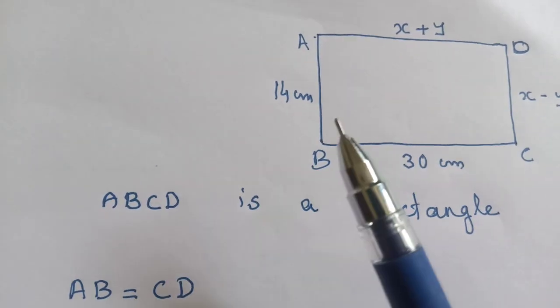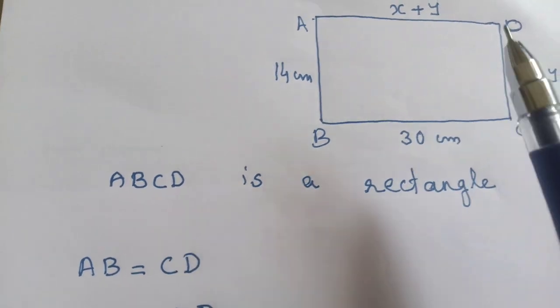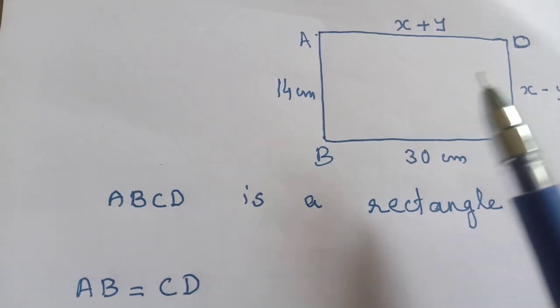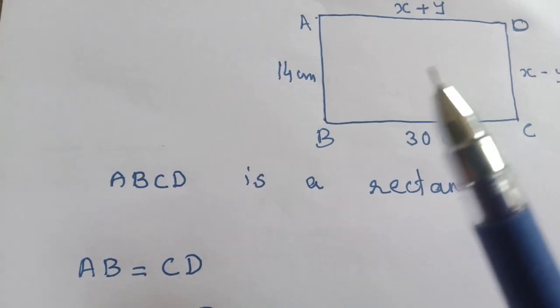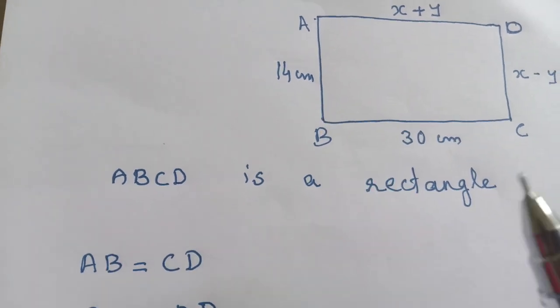We know ABCD is a rectangle, so opposite sides are equal. That is the property of a rectangle.